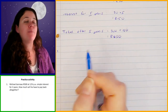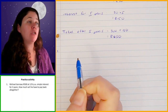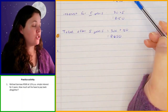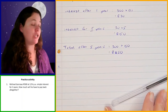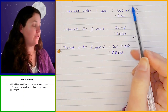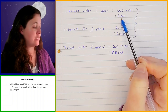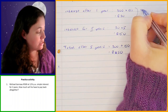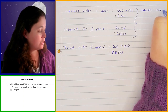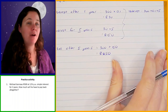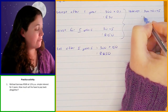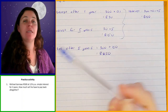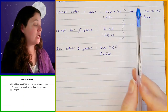Michael has borrowed 500 rand, the simple interest rate is 12% per annum, and the time period is three years. I'm going to combine the two steps into one: instead of first working out the interest for one year and then multiplying by the number of years, we can do it all in one step. So the interest is 300 times 0.1 times 5 — or in this case 500 times 0.12 times 3, which gives us 180 rand.